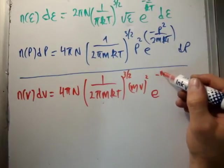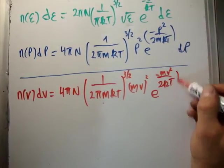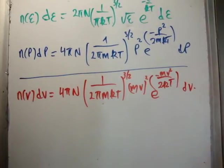e to the minus m v squared over 2k t dv. And this is known as the Maxwell-Boltzmann distribution formula for the distribution of velocities in a gas. And believe it or not, this is around since about 1860.